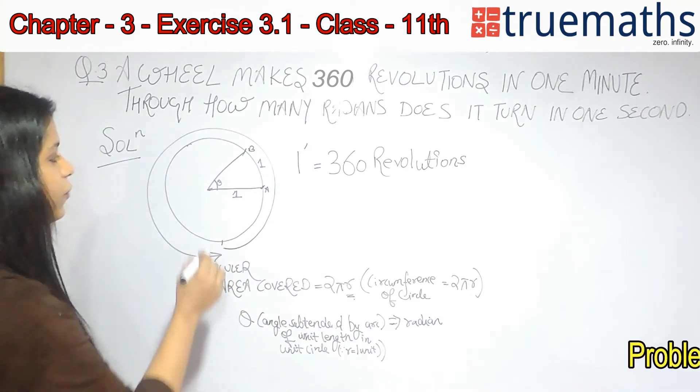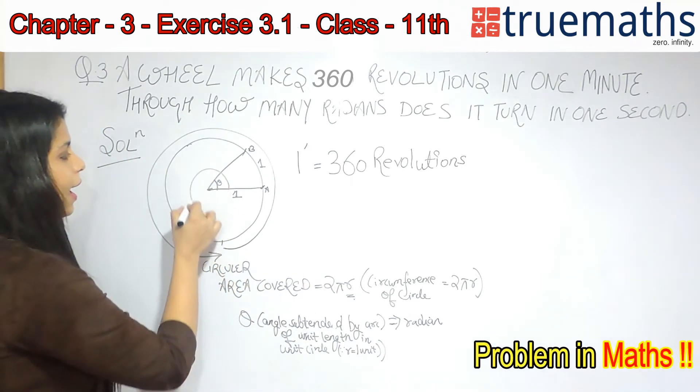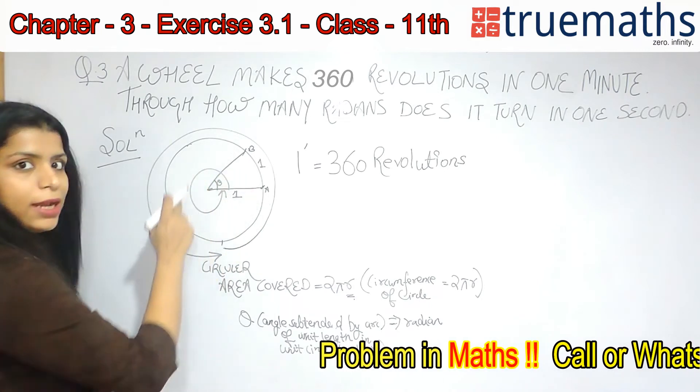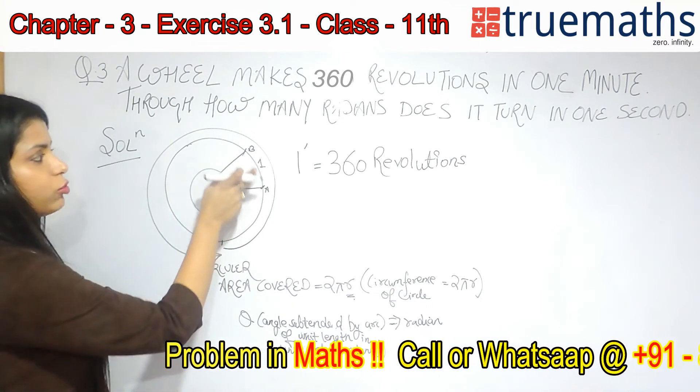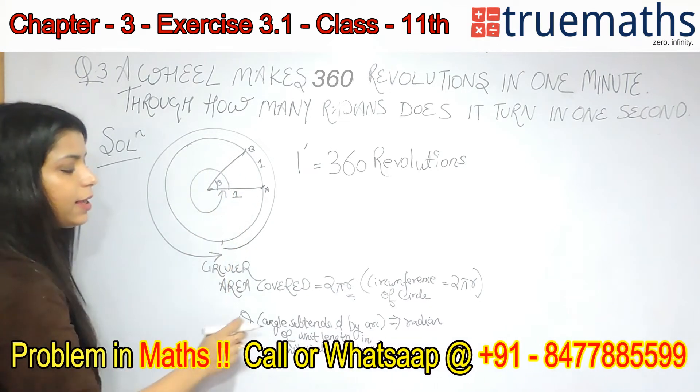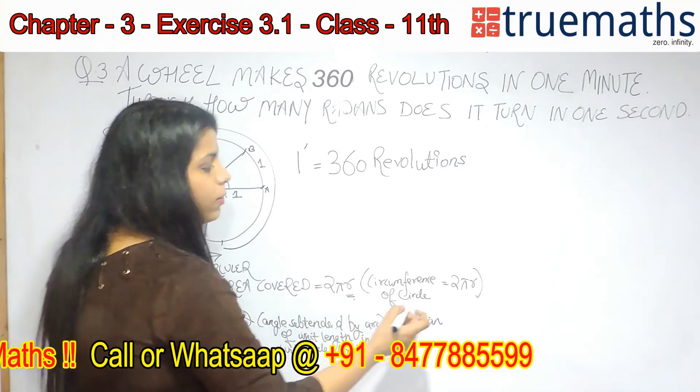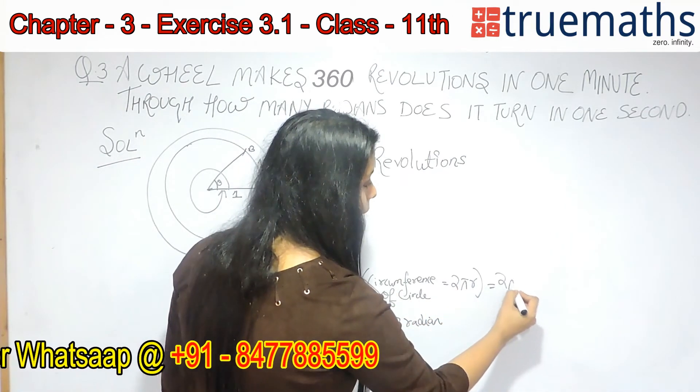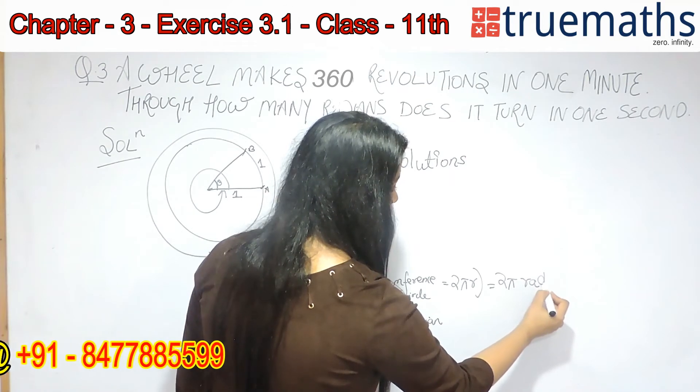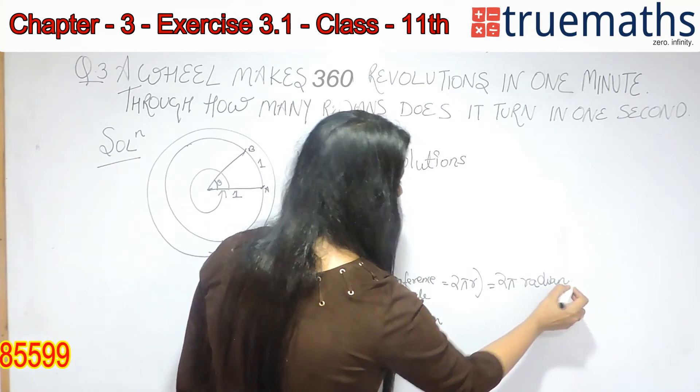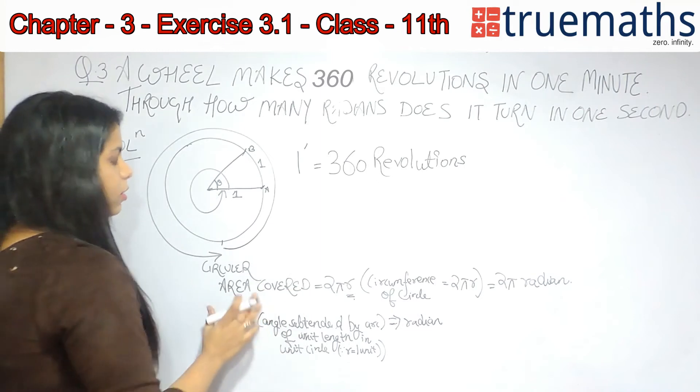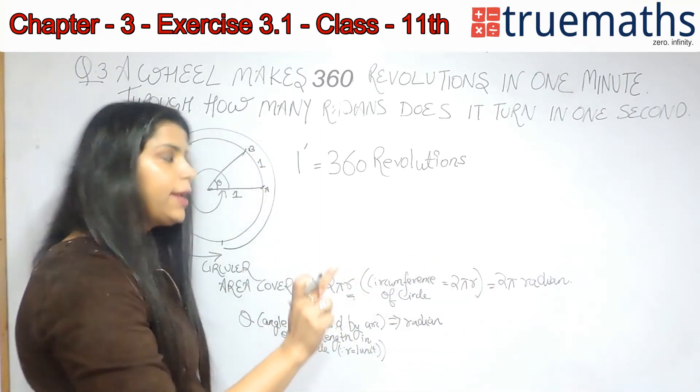Now I have to find this complete angle. So I can say that 1 unit, 1 motion, 1 revolution of the circle is covering how much? 2π radians.